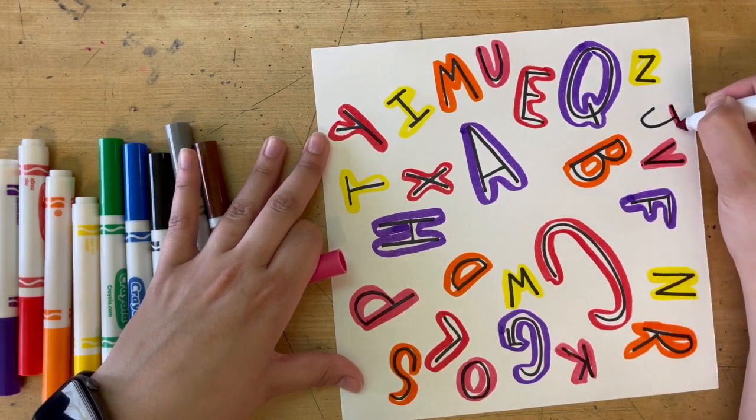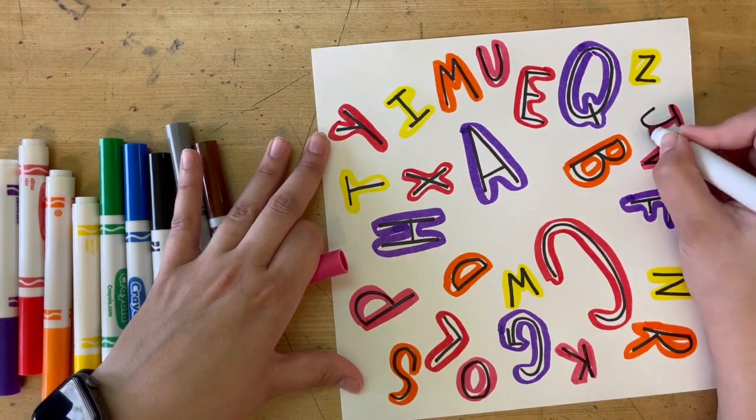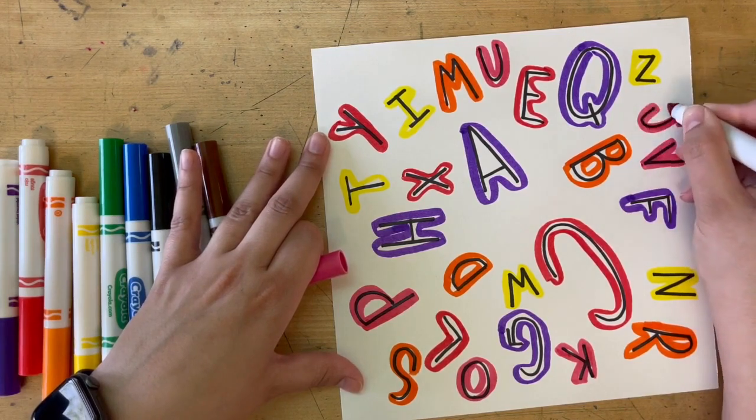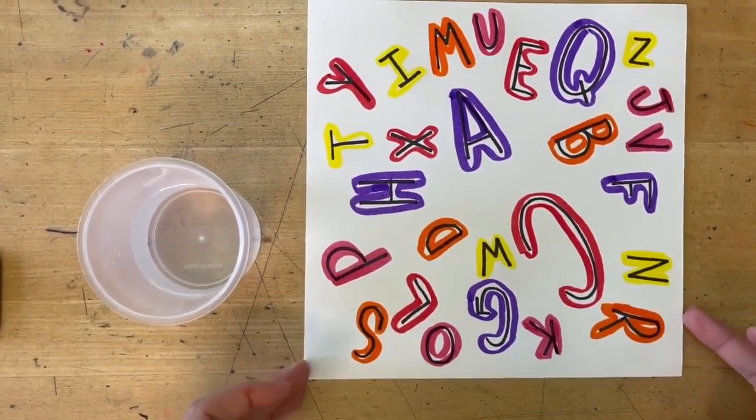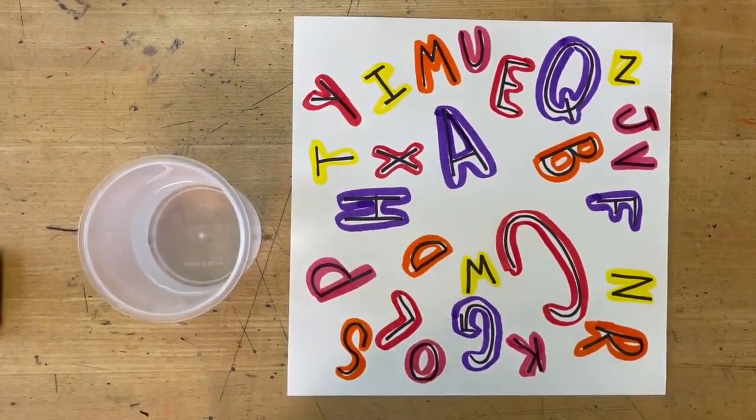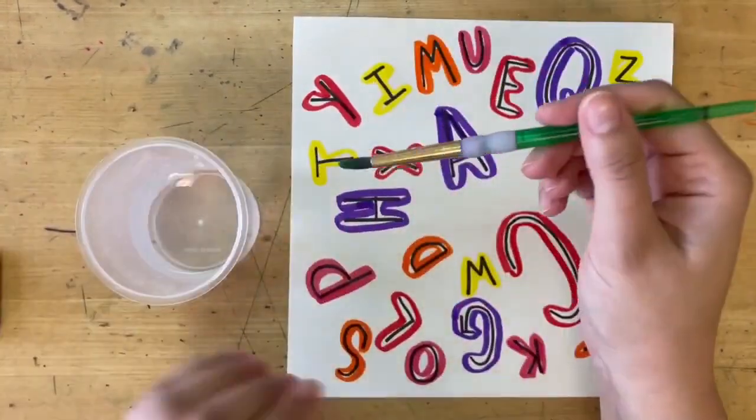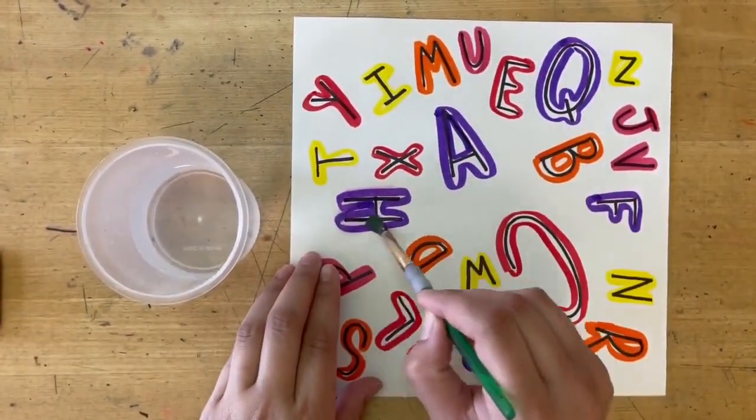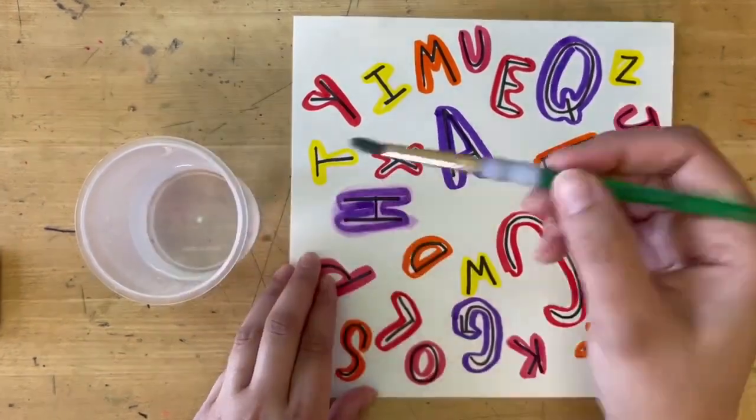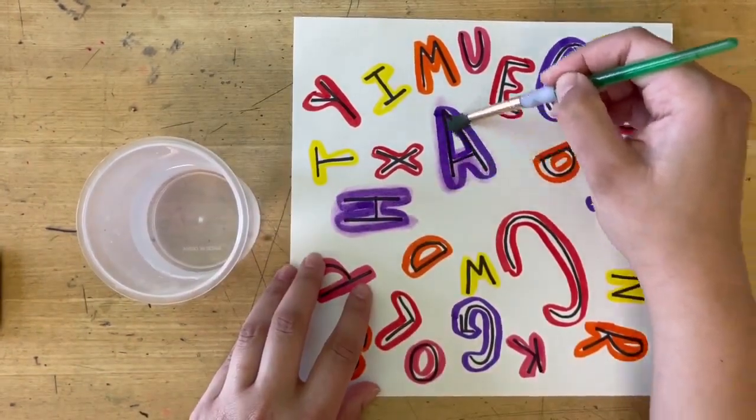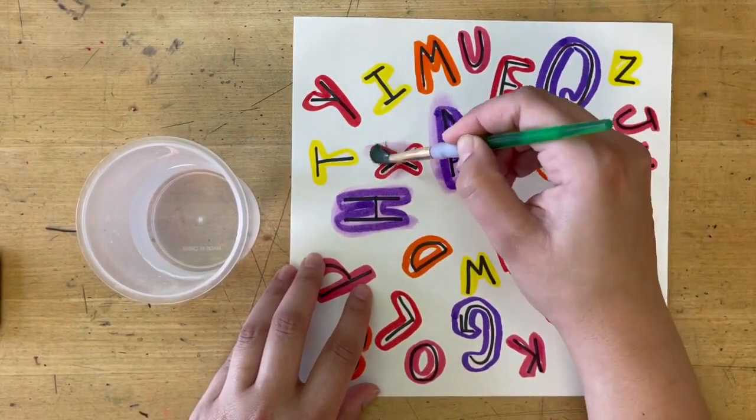At the very end you should have one letter that is left over. You can pick any color you want for that letter. Next, what we want to do to make our marker turn into paint is we're going to take clear water and a paintbrush and brush a little bit of water onto that color. What that does is it makes the color spread out and almost look like watercolor, so just using a little bit of water.